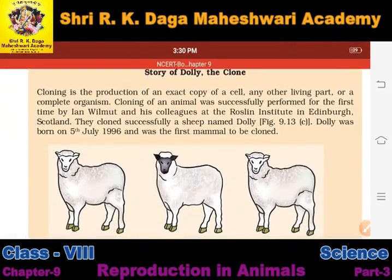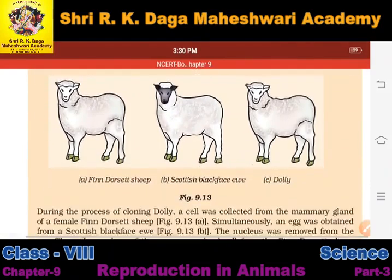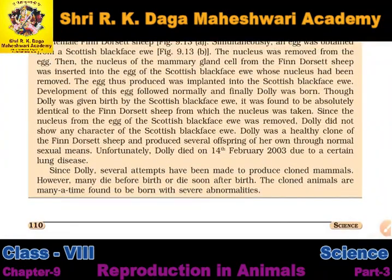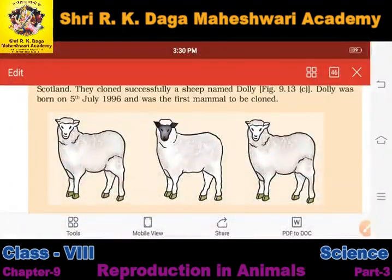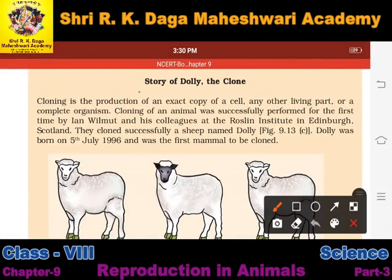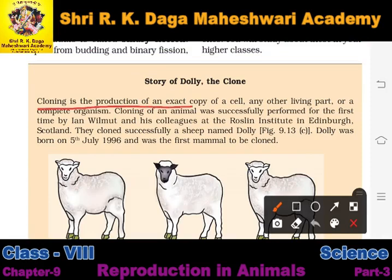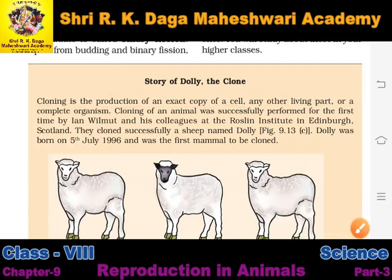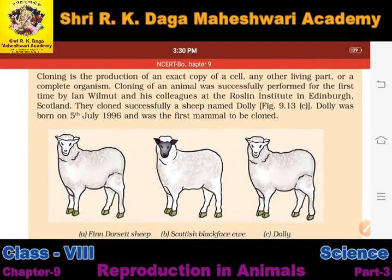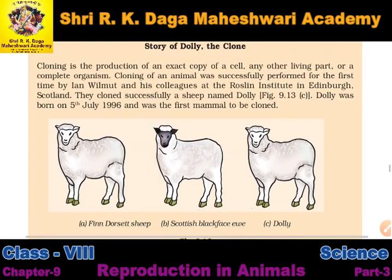Now, the story of Dolly the clone. Cloning is the production of an exact copy of a cell, any other living part, or a complete organism. Cloning of an animal was successfully performed for the first time by Ian Wilmut and his colleagues at the Roslin Institute in Edinburgh, Scotland.